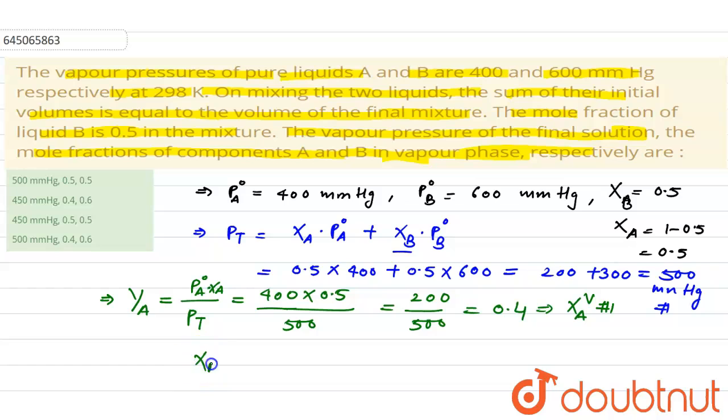Now mole fraction of B in vapor phase would be 1 minus mole fraction of A in vapor phase, which would be equal to 1 minus 0.4, so it would be equal to 0.6.